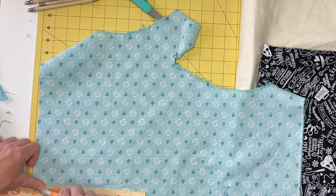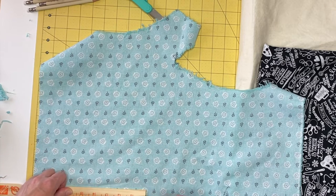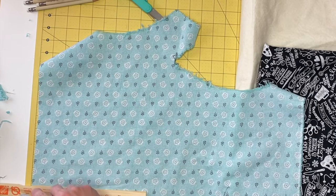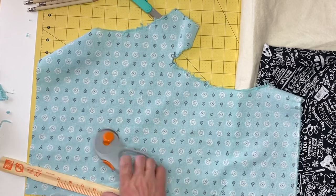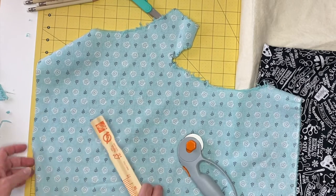Measure and cut out your fabric and batting. You will need the front and back fabric. This includes two squares of 100% cotton. To make your bowl cozy the same size as my example, you will need to cut them into 10-inch squares.